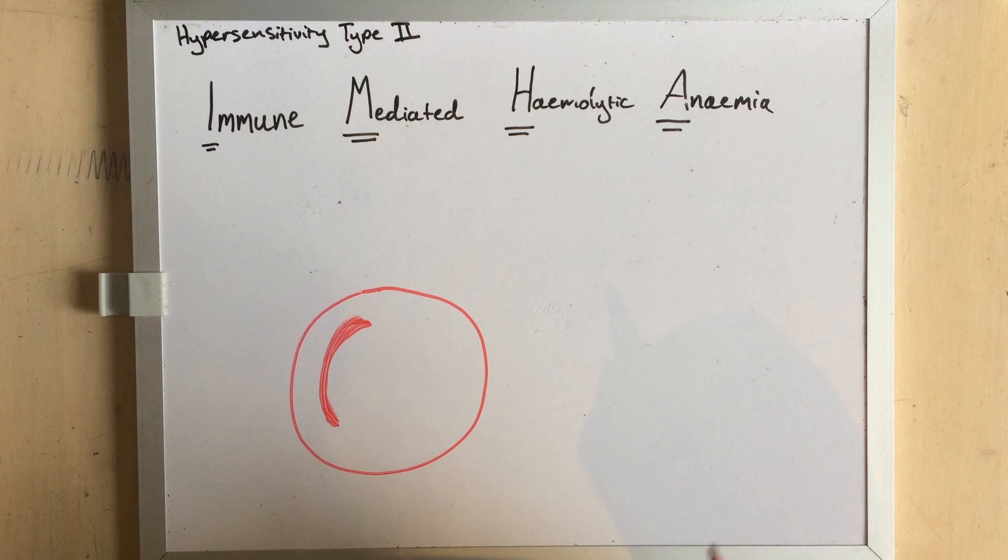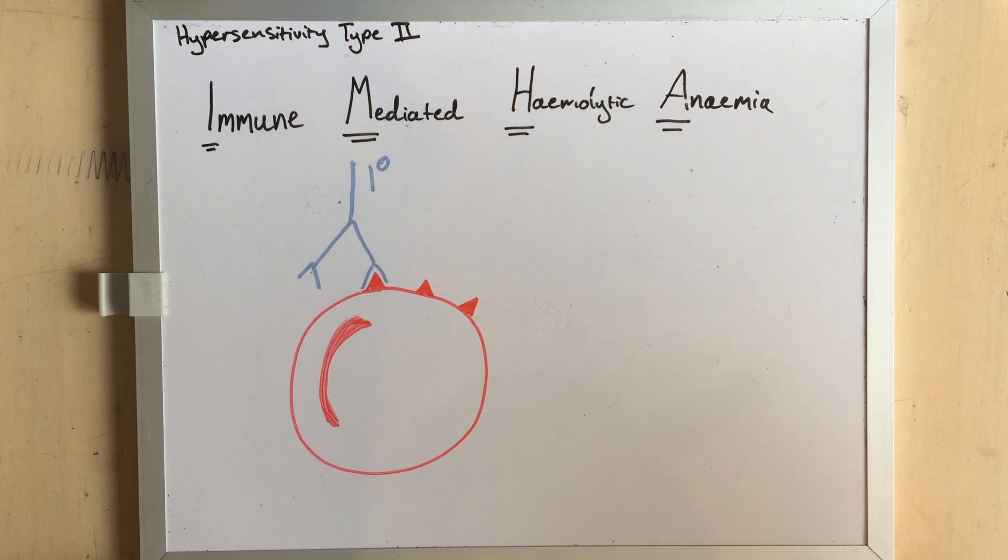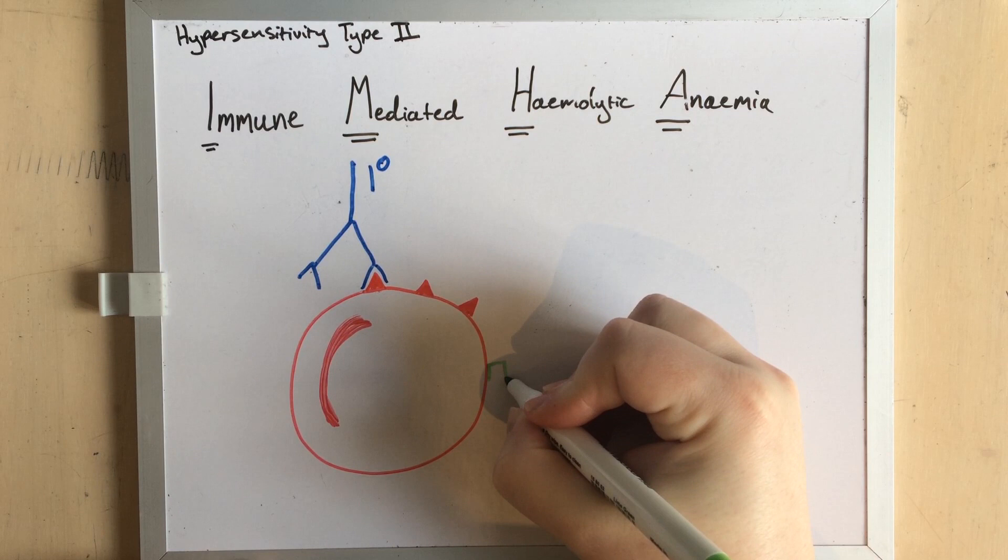Primary IMHA occurs when you have antibodies directed to antigens that are naturally occurring on the surface of the red blood cells. Secondary IMHA occurs when the immune system develops antibodies to something else, which happens to get stuck on the surface of these red blood cells.